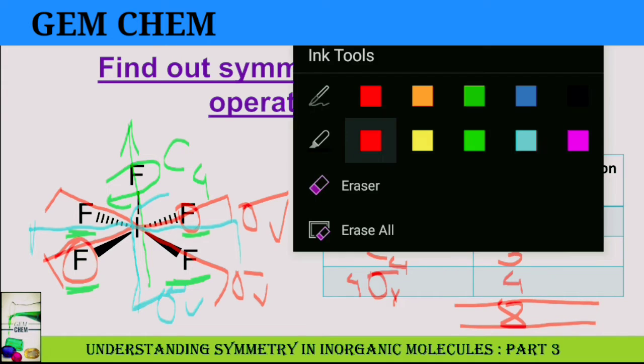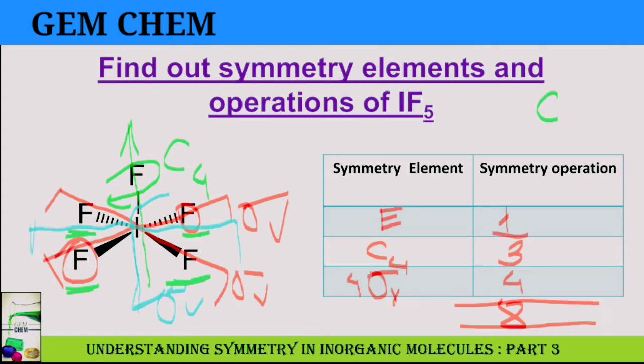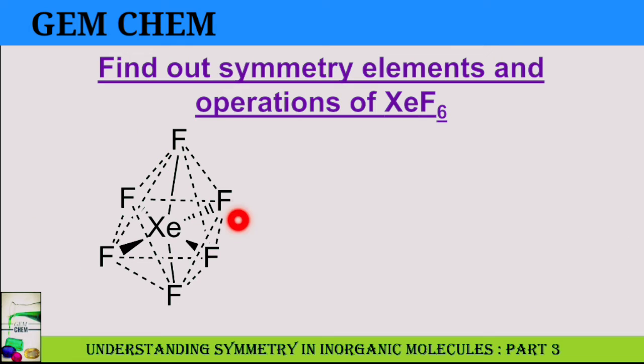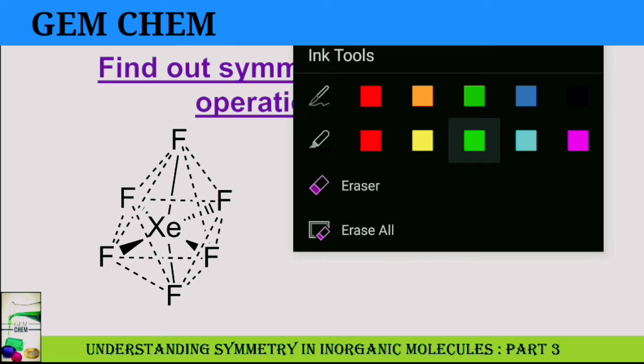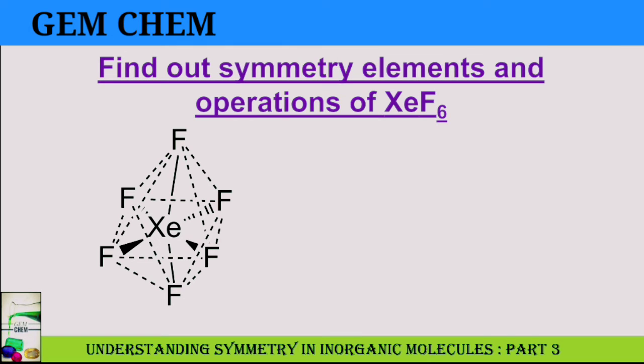Now we are going to shift to our next molecule, which is XeF6. This is exhibiting octahedral geometry. In this case, if you minutely see, one of the lone pairs of xenon is placed here.